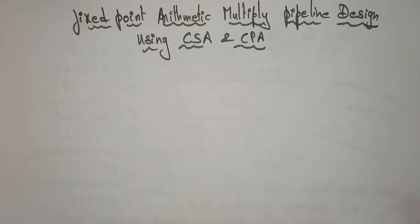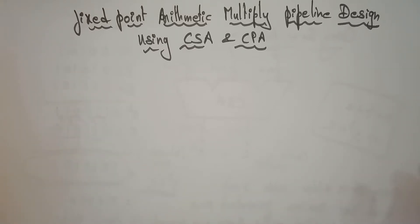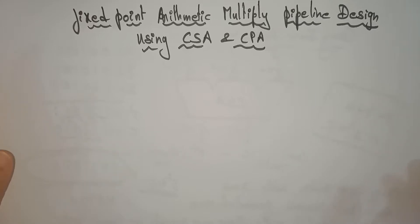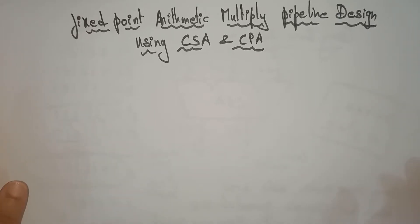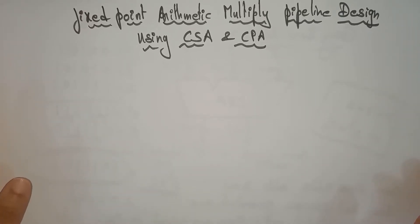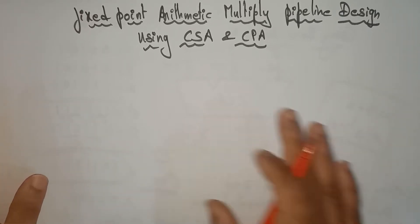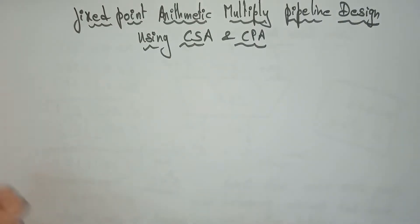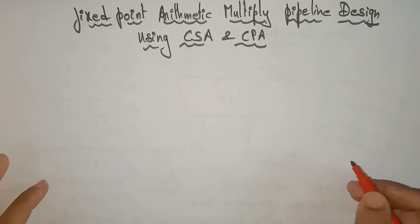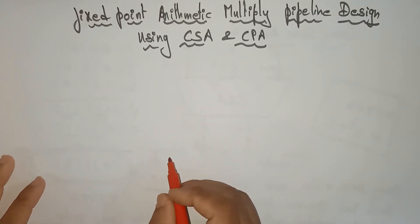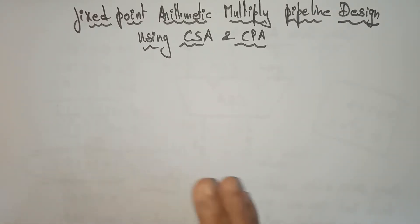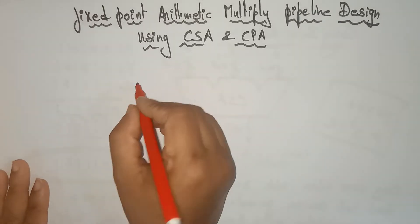Welcome back students. Now coming to the next topic: fixed-point arithmetic multiply pipeline design using carry save adder and carry propagation adder. With the help of these two circuits, we are going to design a multiply pipeline design. Multiplication of two fixed-point numbers is generally a slow process.